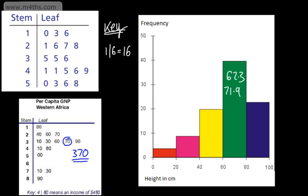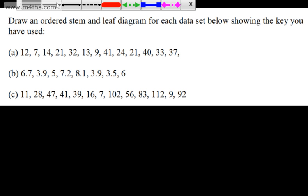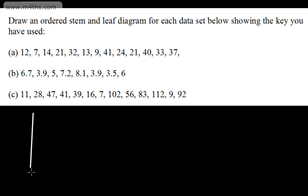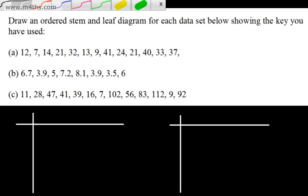Let's look at some stem and leaf diagrams. We're asked to draw an ordered stem and leaf diagram for each data set, showing the key we've used. Looking at the first one, we've got values from 7 up to 41. I'm going to start by drawing an unordered stem and leaf diagram and then transfer that to an ordered one. It takes slightly longer, but it means I'm not going to make mistakes.